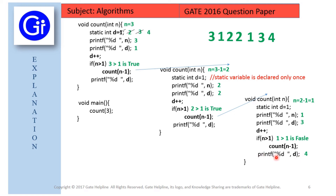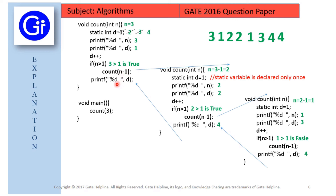We return the program counter to the count(2) call. After returning, there is a printf statement printing d, which is still 4, so we print 4 to the output. After that statement we return again to the count(3) call, where there is another printf statement printing d, which is 4, so we print 4 to the output once more.